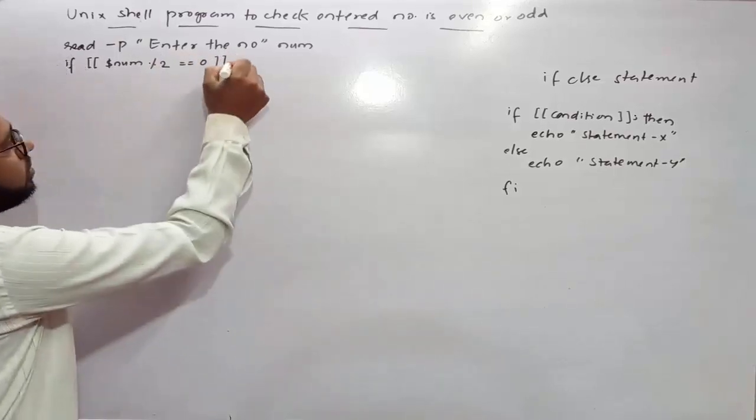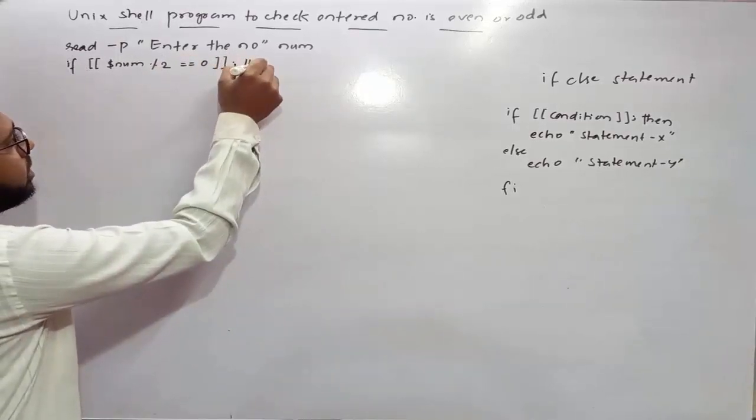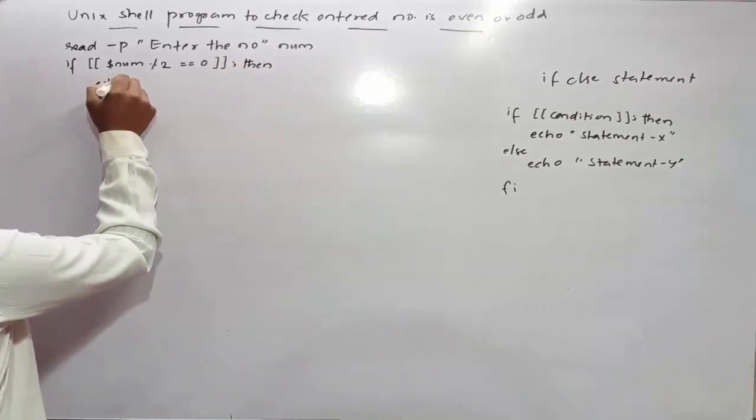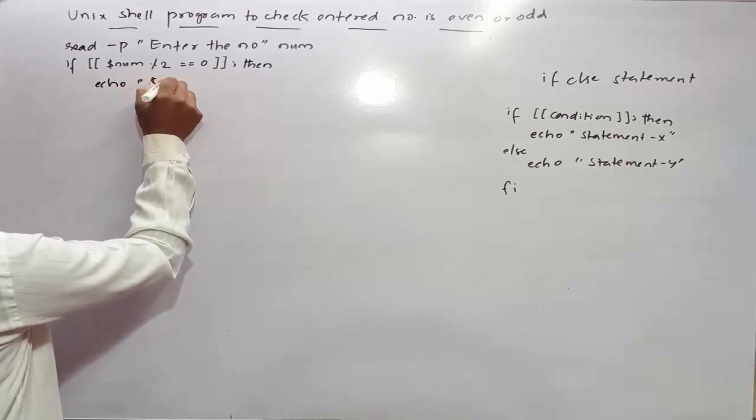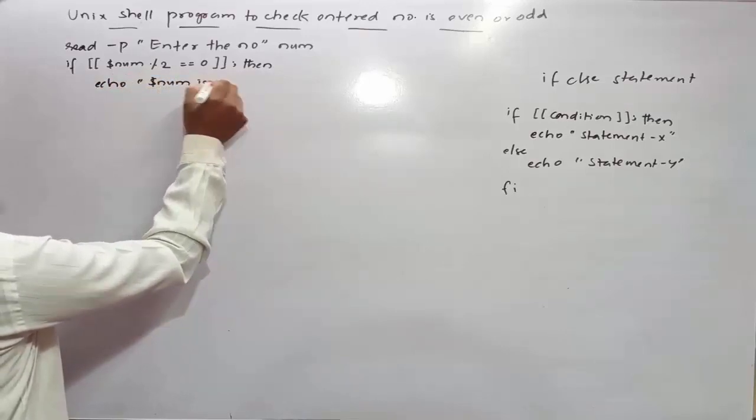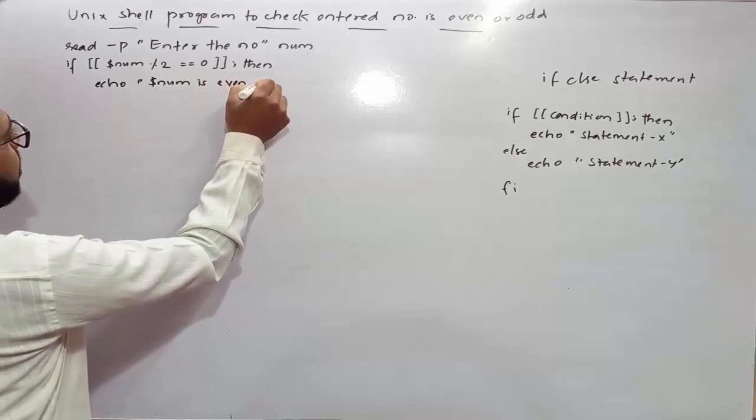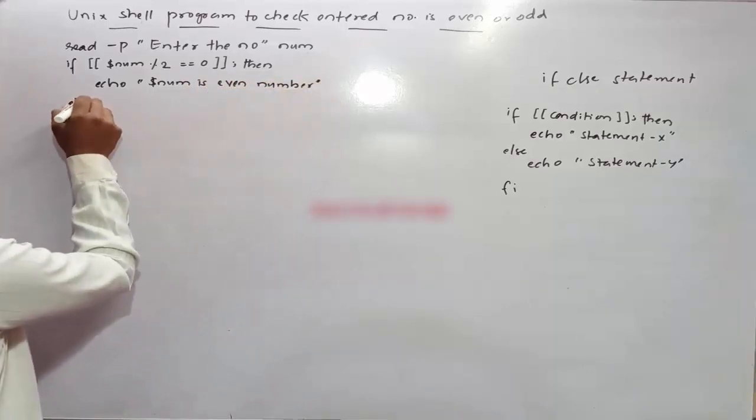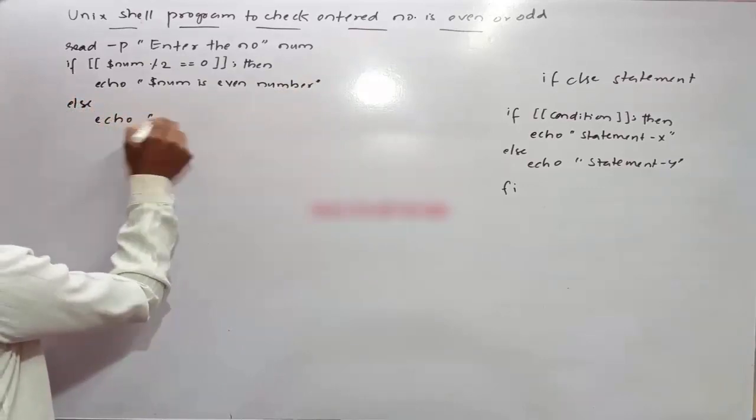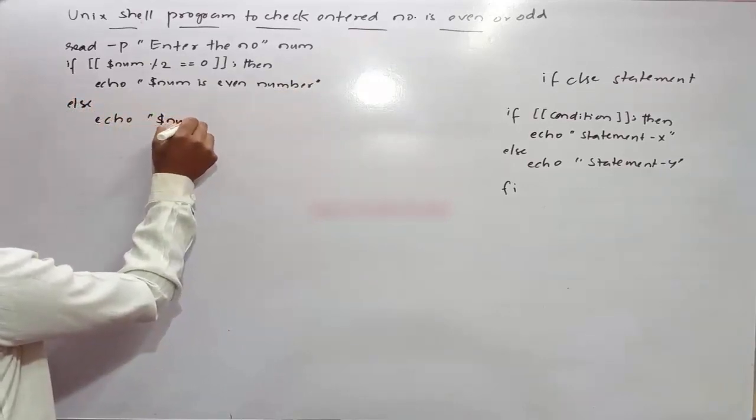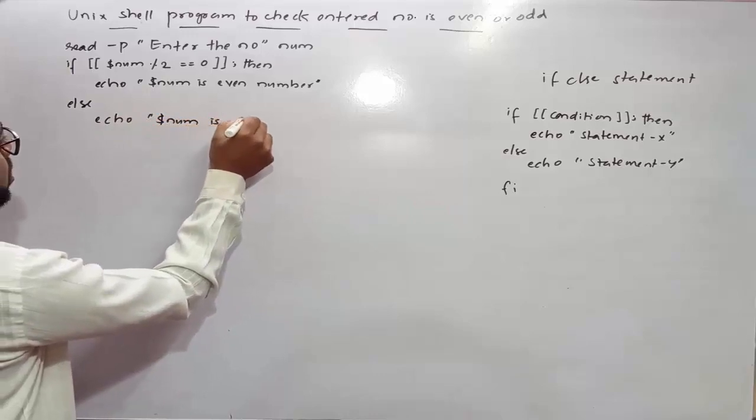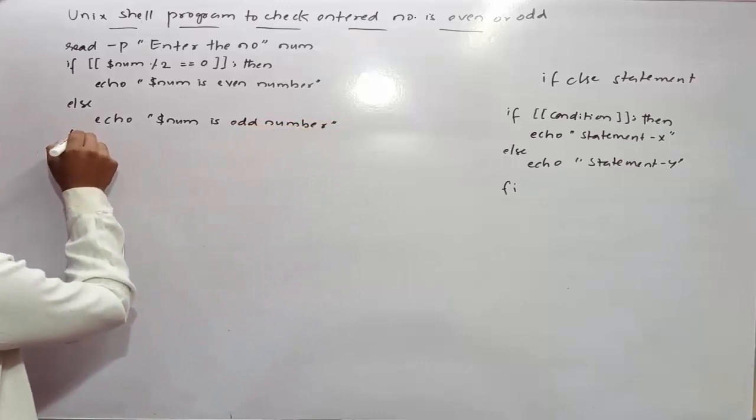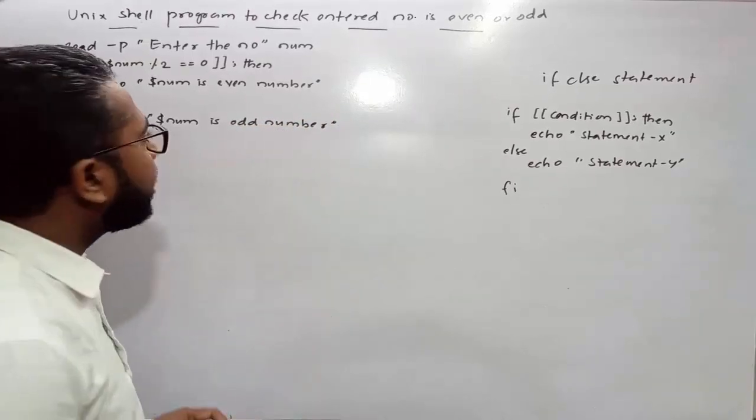Put semicolon and then keyword. Next, echo dollar num is even number. Else, echo space double quote dollar num is odd number. Then you need to close if.